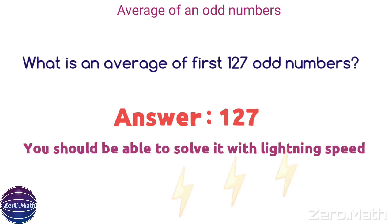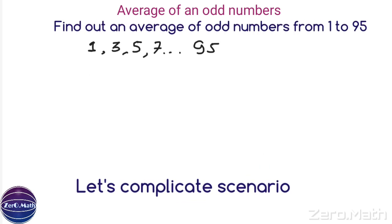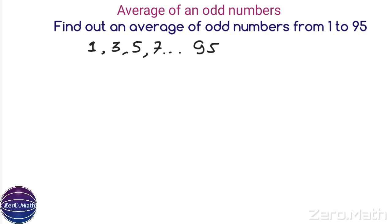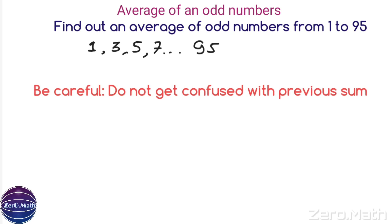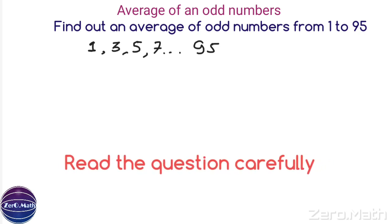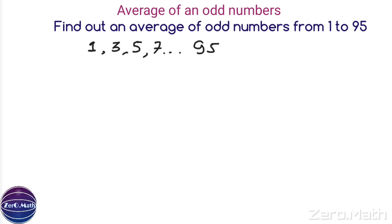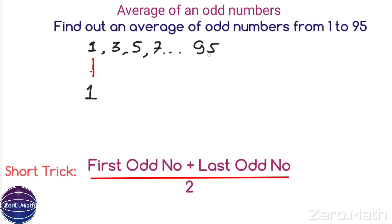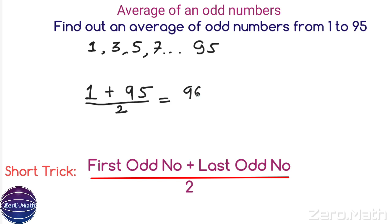Now let us complicate the scenario. Find the average of odd numbers from 1 to 95. Do not get confused with the previous sum — the previous sum was to find the average of the first 95 odd numbers. Here, 95 is not the 95th term; please read the question carefully. The trick is: take the first odd number (1) and the last odd number (95), add them, and divide by 2. That gives 96 divided by 2, which equals 48 — the average of odd numbers from 1 to 95.